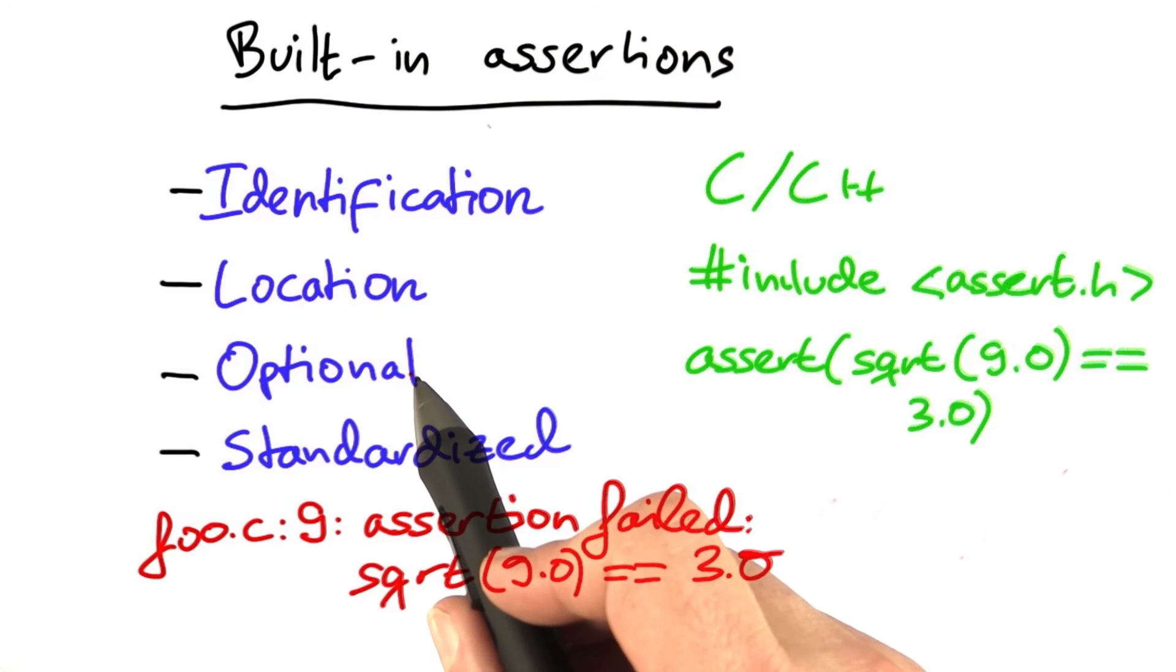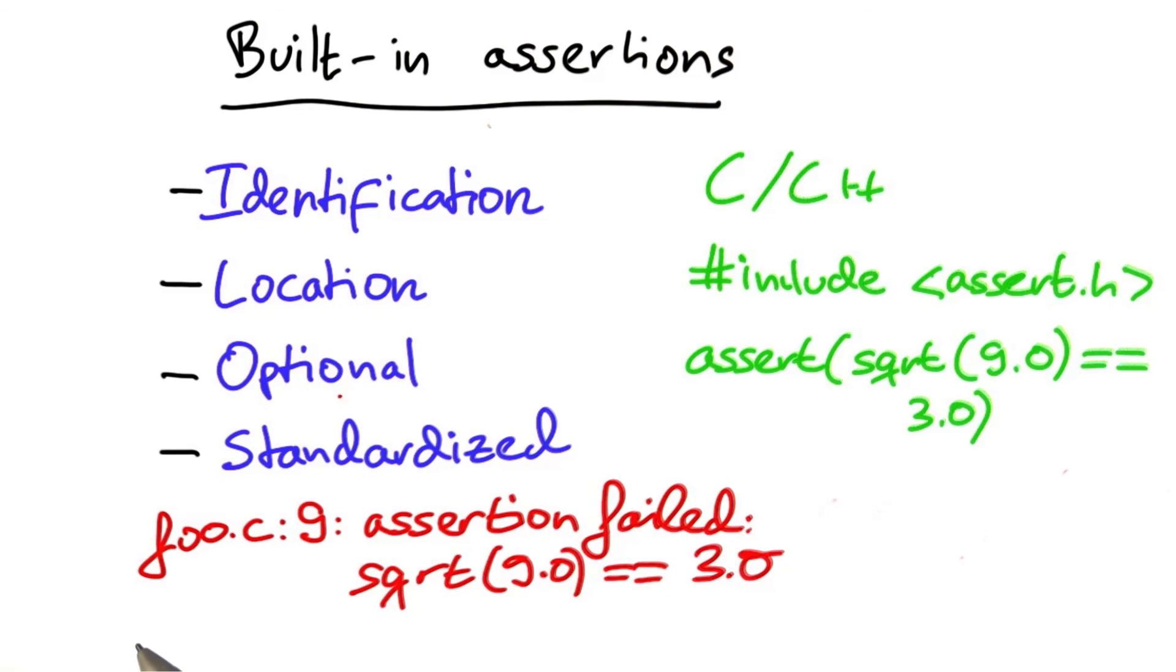In C and C++, assertions are optional. You can turn them on and off using a simple argument to the compiler. And finally, they're standardized if you include assert.h. That's always the form, and this is what programmers look for and understand.